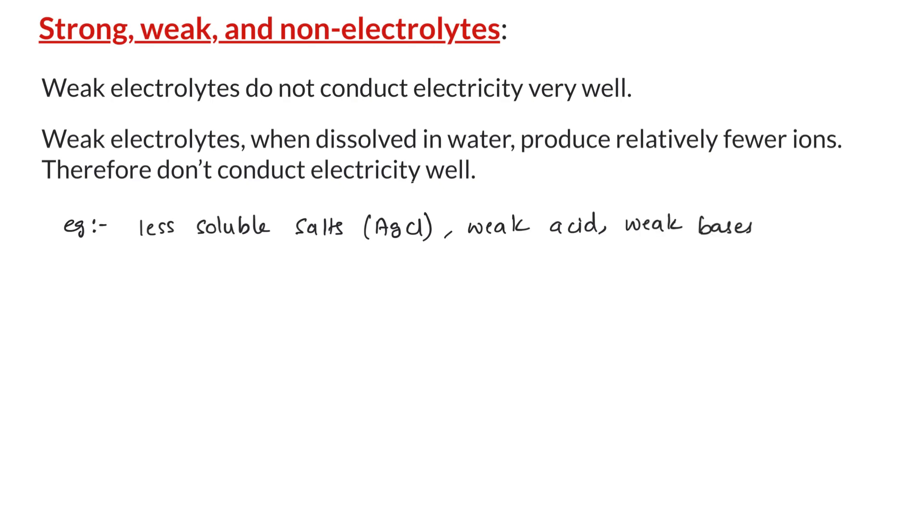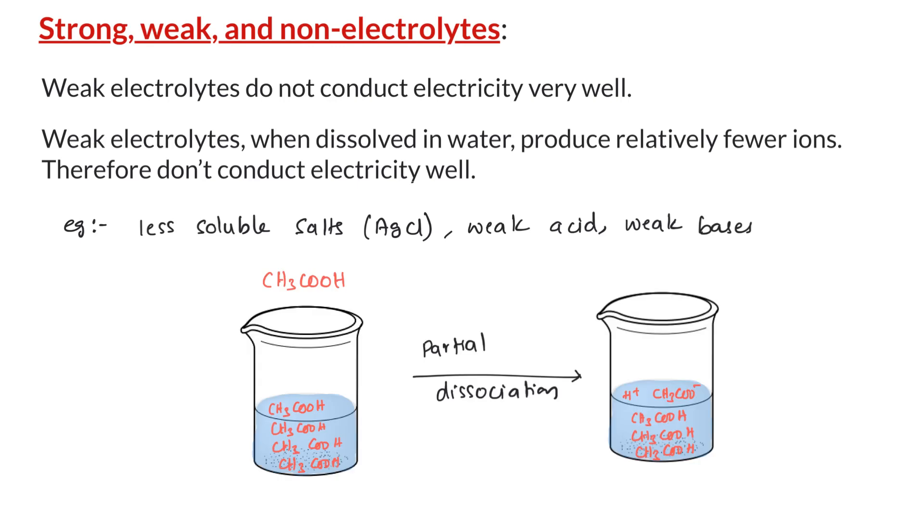For a weak acid such as acetic acid, around 1% of its molecules dissociate in aqueous solution. The remaining 99% stay undissociated. Therefore, the solution of acetic acid weakly conducts electricity.